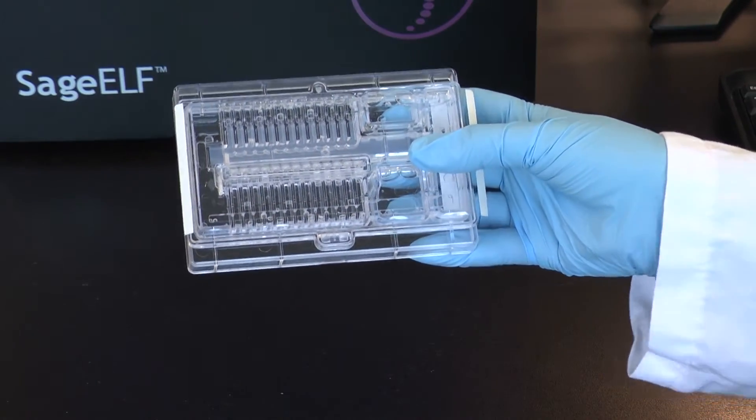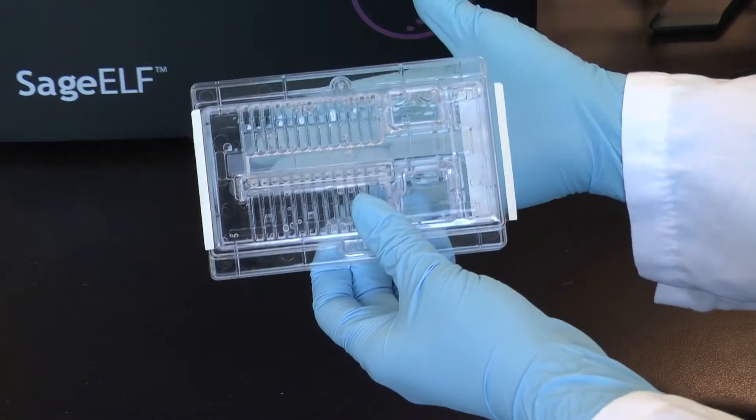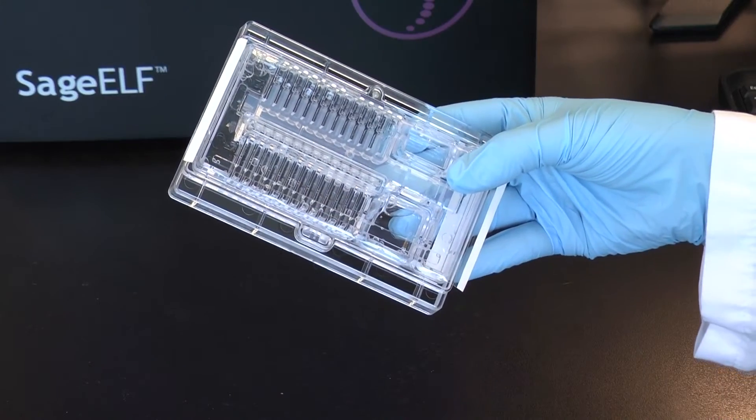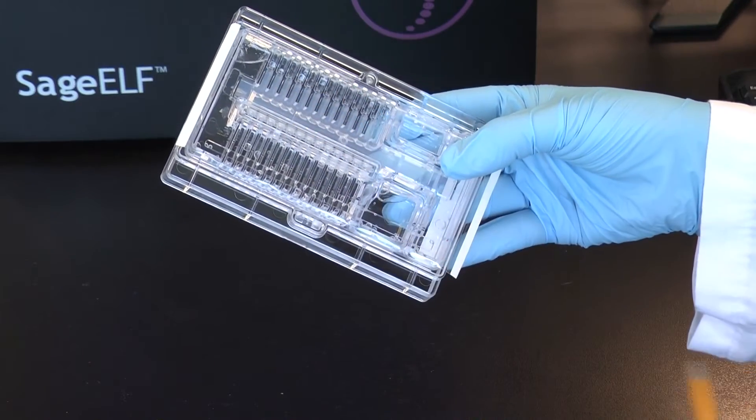Tap to clear any bubbles from beneath the agarose in the thirteen elution pathways. Then, rotate the cassette to collect these bubbles in the lower reservoir.